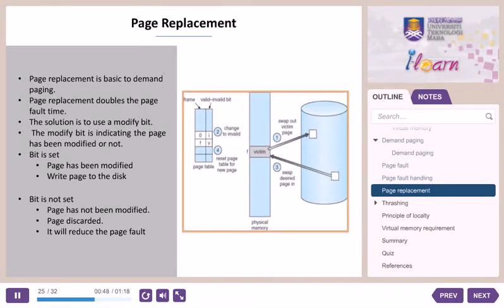When a page fault occurs, the OS finds the location of the desired page on disk, then finds a free frame. If there is a free frame, use it. If there is no free frame, a page replacement algorithm is used to select a victim frame and swap it out to backing store. The desired page is brought into the newly freed frame with an invalid bit set. The page and frame tables are then updated. The desired page is swapped into memory using the page replacement algorithm, and the page table is reset for the new page.